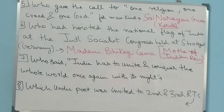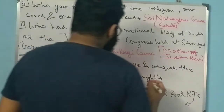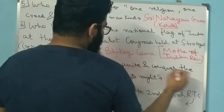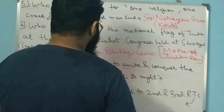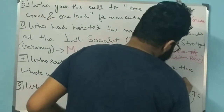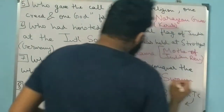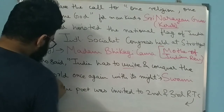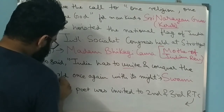Question 7: Who said 'India has to unite and conquer the whole world once again with its might'? The answer to this question is Swami Vivekananda.